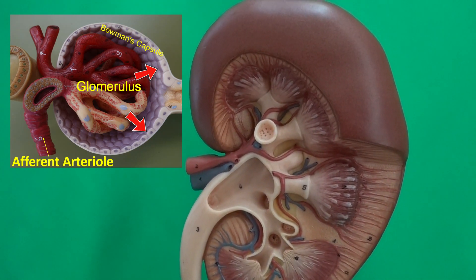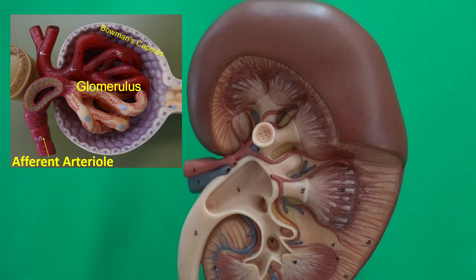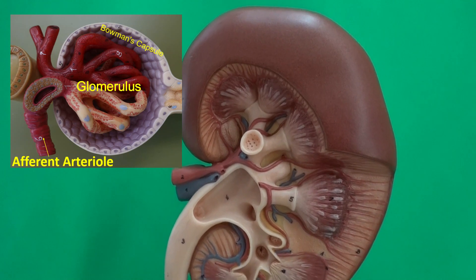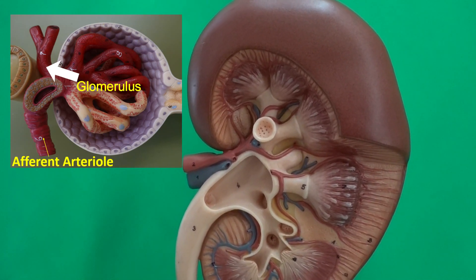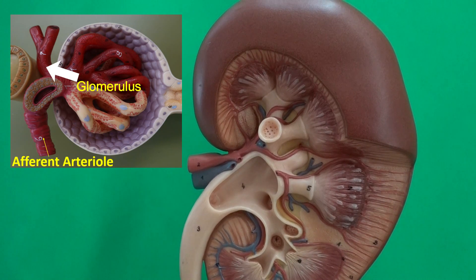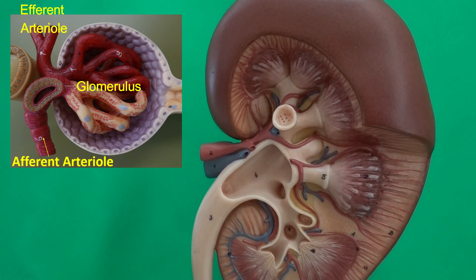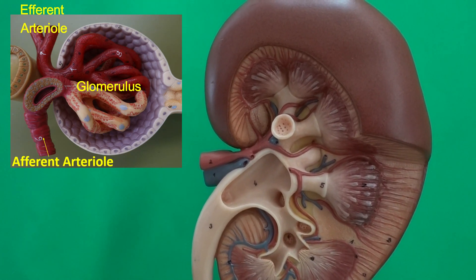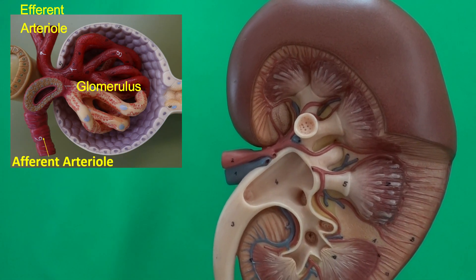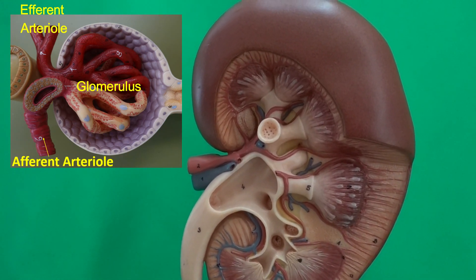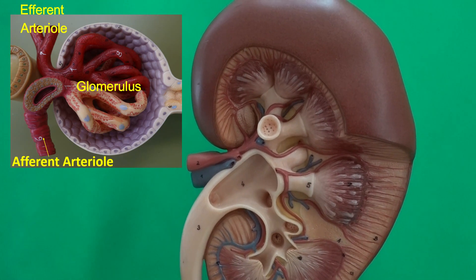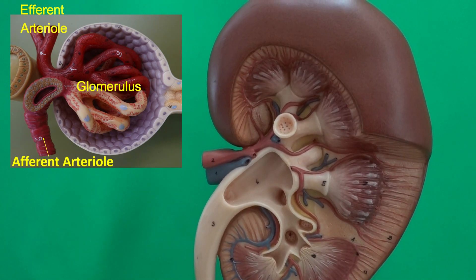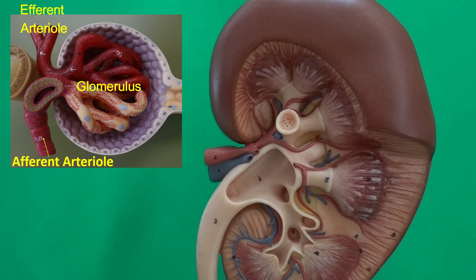Between the glomerulus and Bowman's capsule, filtration takes place. When we follow the glomerulus, we see that this network of capillaries eventually releases its blood into another blood vessel — which, surprisingly, is another arteriole named the efferent arteriole. This is a unique characteristic of the glomeruli of kidneys, because everywhere else in our body a capillary bed sits between an arteriole and a venule; however, the glomerulus sits between two arterioles.